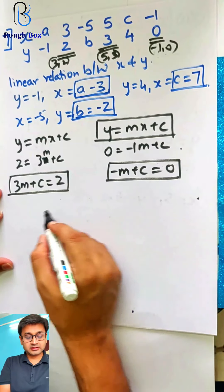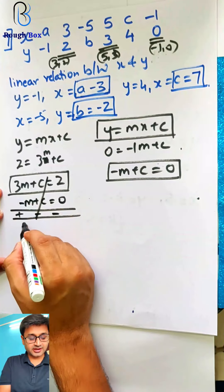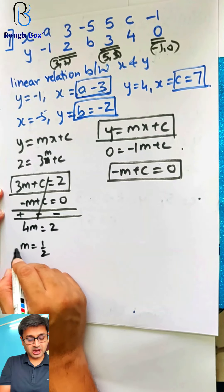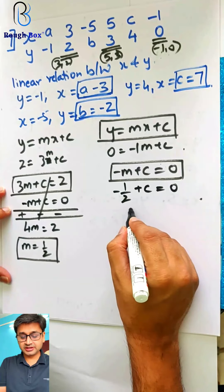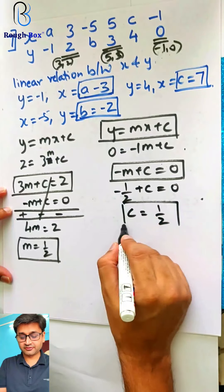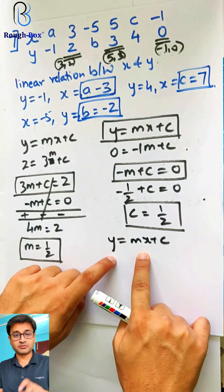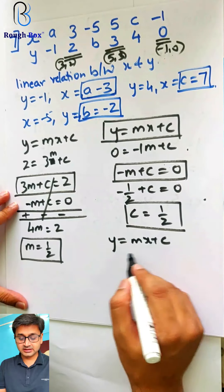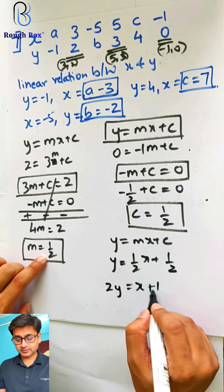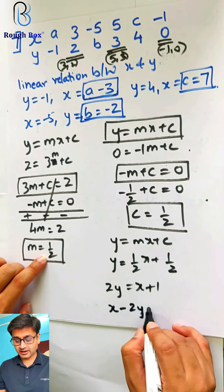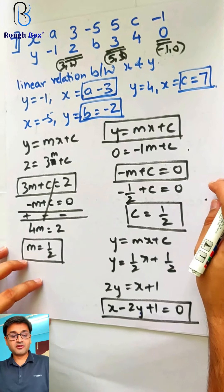Using simultaneous equations: subtracting gives 4m equals 2, so m equals 1/2. Substituting m back: c also equals 1/2. Now take y equals mx plus c one final time and substitute m equals 1/2 and c equals 1/2. Taking LCM: 2y equals x plus 1. So finally: x minus 2y plus 1 equals to 0. This is the linear relationship between x and y for this particular data.